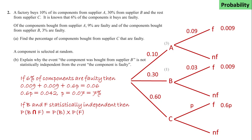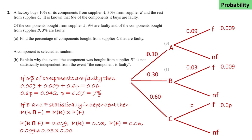From which we calculate P = 0.07, so 7% of components from C are faulty. We're asked to explain why event B (component from supplier B) and event F (component is faulty) are not statistically independent. If B and F were independent, P(B and F) = P(B) × P(F). We know P(B and F) = 0.009, P(B) = 0.3, and P(F) = 0.06. Since 0.009 ≠ 0.3 × 0.06, they are not statistically independent.